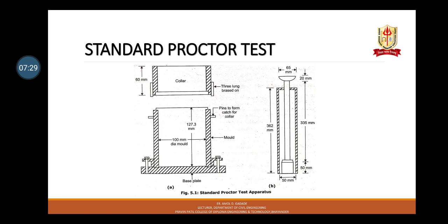The apparatus used is a cylindrical mould with volume 1000 cc, having 10 cm diameter and 12.73 cm height, fitted with a detachable base plate and collar of approximately 6 cm height. A metal rammer is also used, along with balances, electric oven, moisture content cans, and sieves of 50 mm, 20 mm, and 4.75 mm.